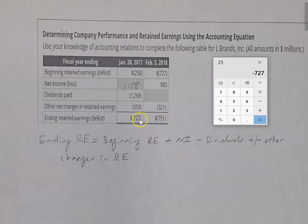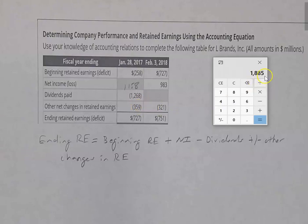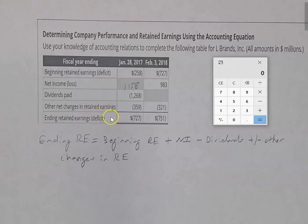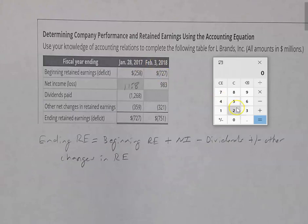Let's verify: negative 258 plus 1,158 minus 1,268 minus 359 equals negative 727. That proves net income was indeed 1,158. Always go back and check that your numbers make sense. Now, this ending retained earnings of negative 727 becomes our beginning retained earnings for the next column, skipping ahead to the February period.